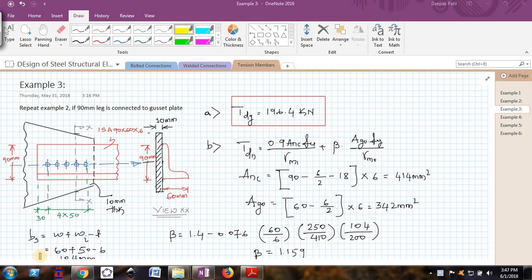Hello friends, welcome back to the video series on design of steel structural elements. This is a very quick video where we will take the same example 2 from the previous video, and now we will connect the 90 mm leg to the gusset plate.